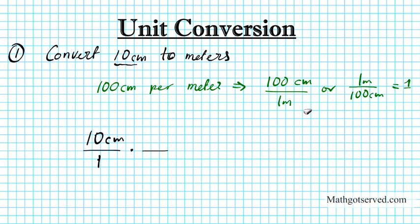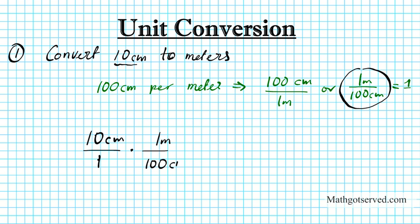Now this is the trick. If you have centimeters on top, you want the centimeters to cancel out, so you pick the one that has centimeters on the bottom. Which one has centimeters on the bottom? This one right here. So this is the conversion factor we're going to use — 1 meter on top divided by 100 centimeters on the bottom.